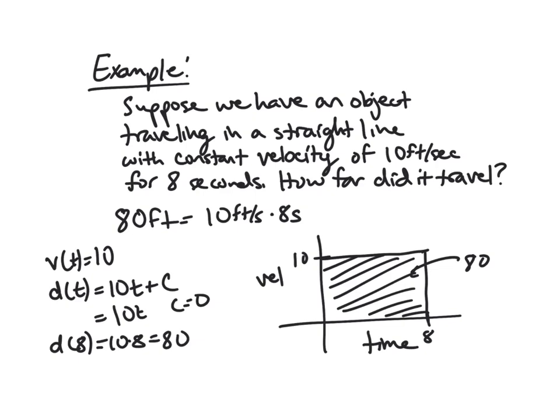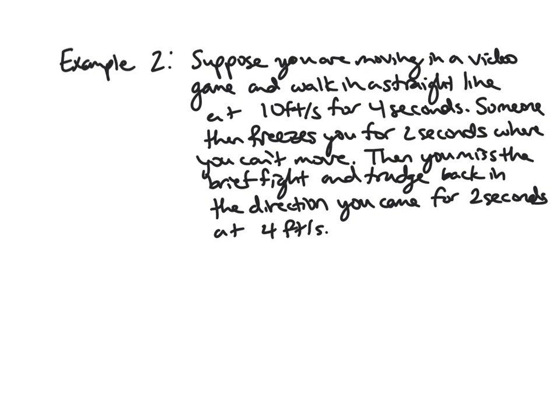So let's look at another one that maybe isn't quite as simple. All right. So here, we'll say we're in a video game. I don't know. I've been watching League of Legends videos lately, even though I don't play the game. And so you're walking in a straight line. You're moving 10 feet per second for 4 seconds. You're walking toward a battle, and then someone hits you with a stun, and you're frozen for 2 seconds, and you can't move. So you have velocity 0. You miss this fight, and then you're all sad. And so you trudge back in the direction you came for a couple seconds at a slower pace of 4 feet per second. So same question. How far have you traveled? What is your net distance?